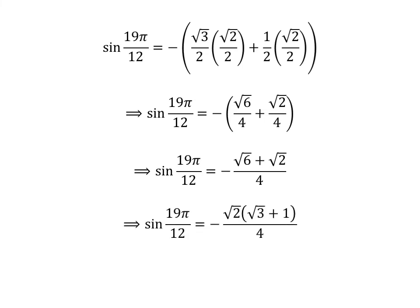Taking out the common factor square root of 2 in the numerator gives us sin of 19 times pi upon 12 is equal to minus of square root of 2 times square root of 3 plus 1 upon 4.